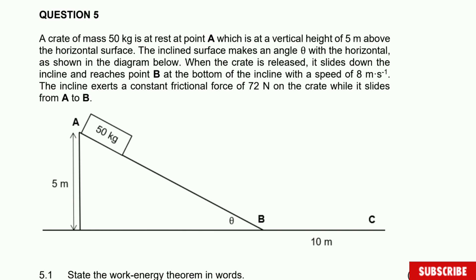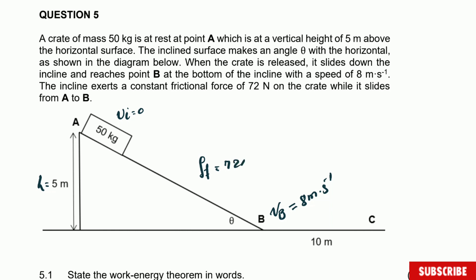I want to read once more to get some data that is not in the picture. We have the height of 5 meters. The inclined surface makes an angle theta — we don't know that value. The crate is released, so the initial velocity is equal to zero. The velocity with which the crate reaches point B is equal to 8 meters per second. The frictional force of the incline is equal to 72 newtons.